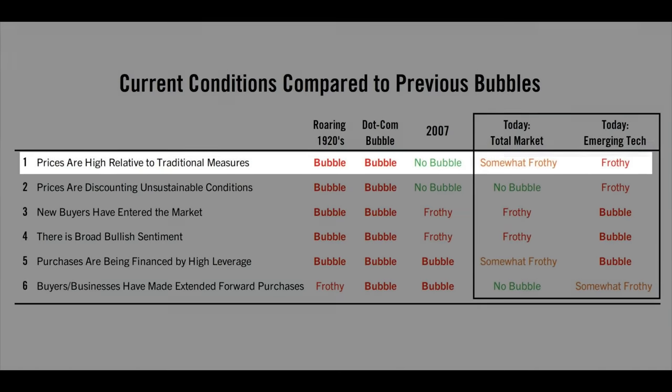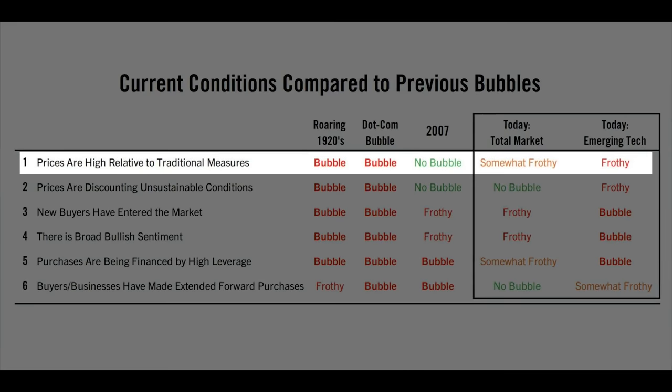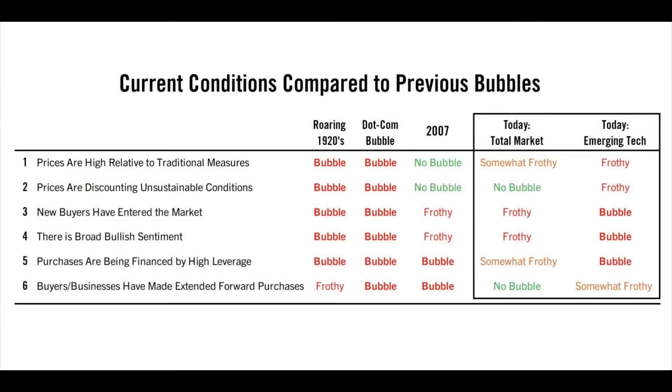The first consideration is how high prices are relative to traditional measures — for example, are PEs high or yields low? That's a consideration, but it's not what I mean by a bubble. You can have prices high, which means returns low, and that could go on for a very long time — that doesn't mean a bubble pops. So I'm really looking at whether you get a pop, but still, it's an ingredient.